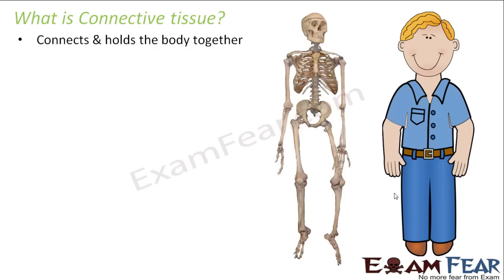When you think of connective tissue, you can think of a skeleton. This skeleton, along with flesh and all other accessories, forms a human being. The skeleton is actually forming the framework of the body and connecting the different parts — the fingers to the hands, the hands to the shoulders, the shoulders to the chest and back. That tissue which connects the body together is known as connective tissue.